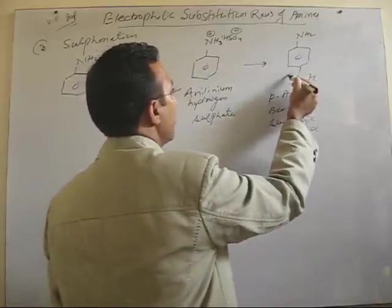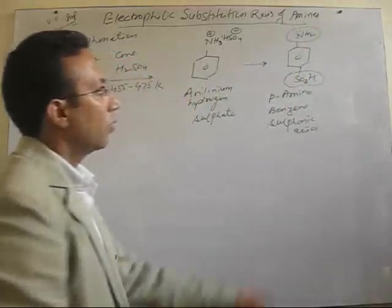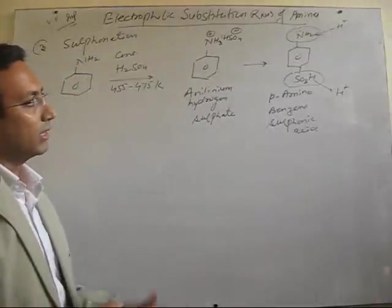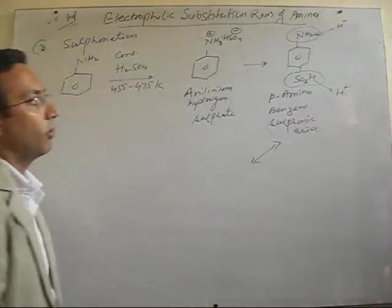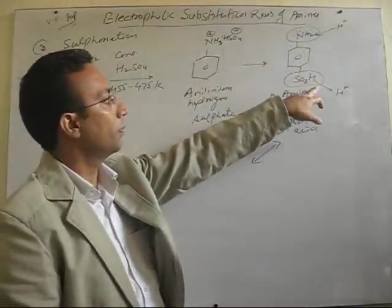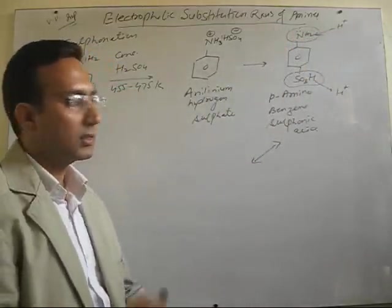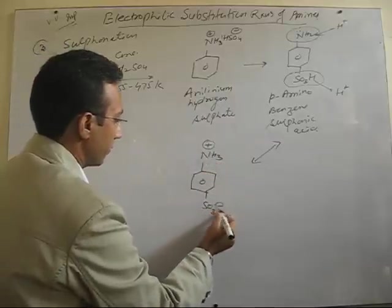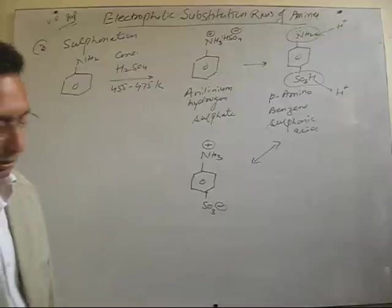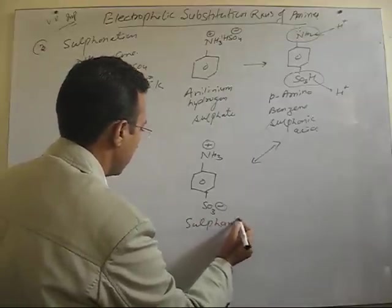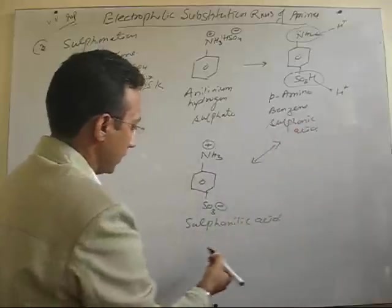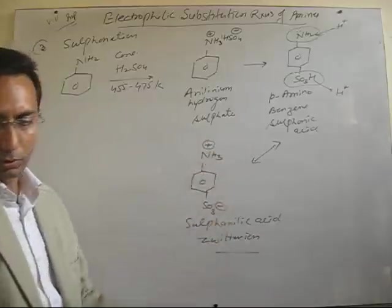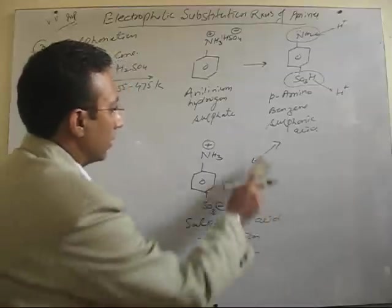Now, this is the compound in which both acidic as well as basic groups are present. One group is capable of donating H+, and one group is capable of accepting H+. So, when such a condition is there in any compound, there exists a possibility of formation of zwitterions. Zwitterions are formed when one group loses H+, and other groups gain H+, in the same molecule. As a result, you get a zwitterion, that is this. So, this is sulfanilic acid, this is also sulfanilic acid and also known as zwitterions. Zwitterions are dipolar ions, positive and negative charge, both are present in the same molecule.